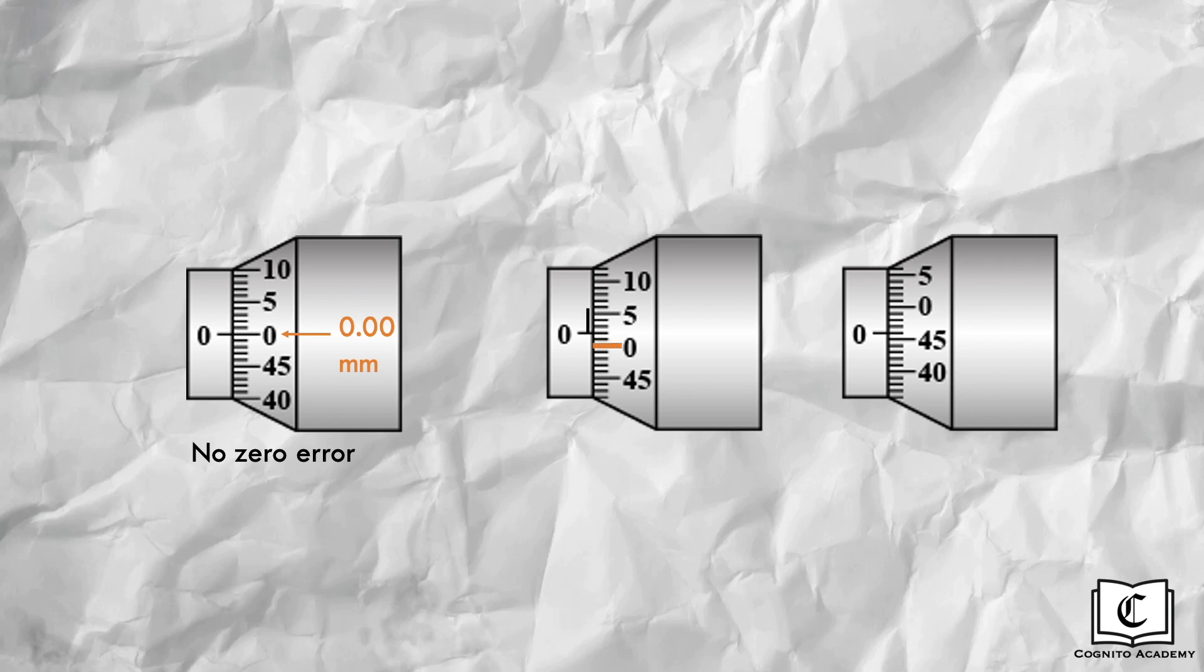In the next reading, the zero marking on the timbre scale is below the red datum line. Hence, there is a positive zero error. Reading it just like a normal micrometer screw gauge reading, the main scale reads 0.0 mm, while the timbre scale reads 0.02 mm. Adding both gives a zero error of positive 0.02 mm.